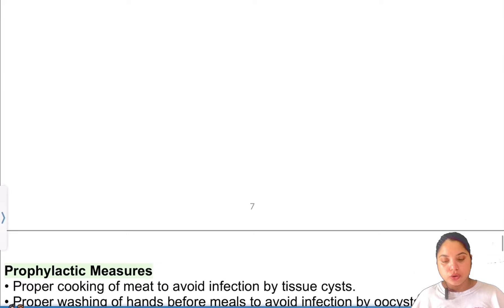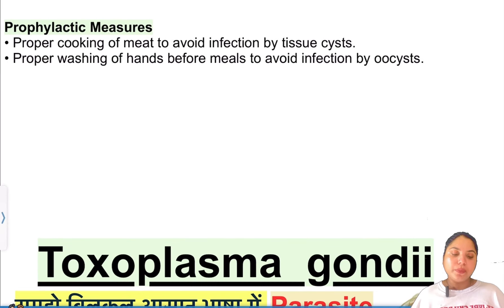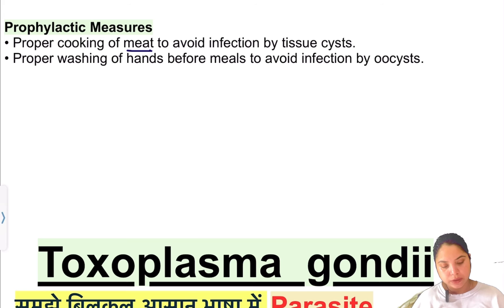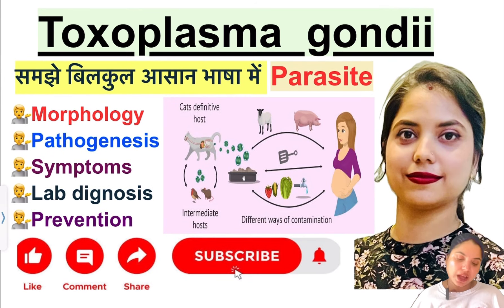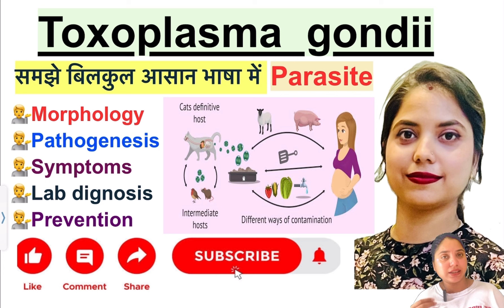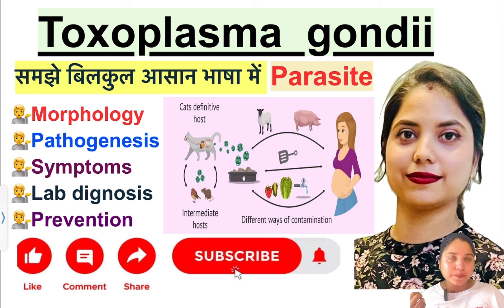For detection of Toxoplasma gondii DNA, molecular methods — specifically PCR — can be used. Preventive measures: avoid consuming undercooked meat; if you do consume meat, ensure it is properly cooked. Avoid undercooked eggs. Wash hands properly before eating to avoid contamination.